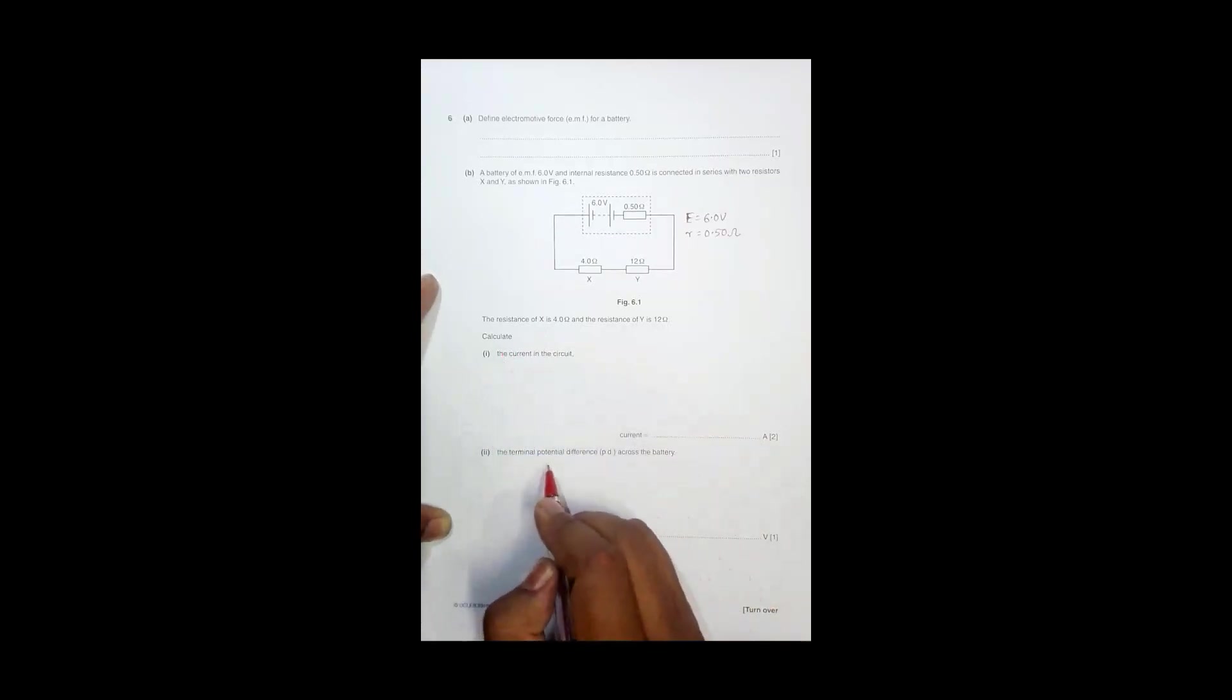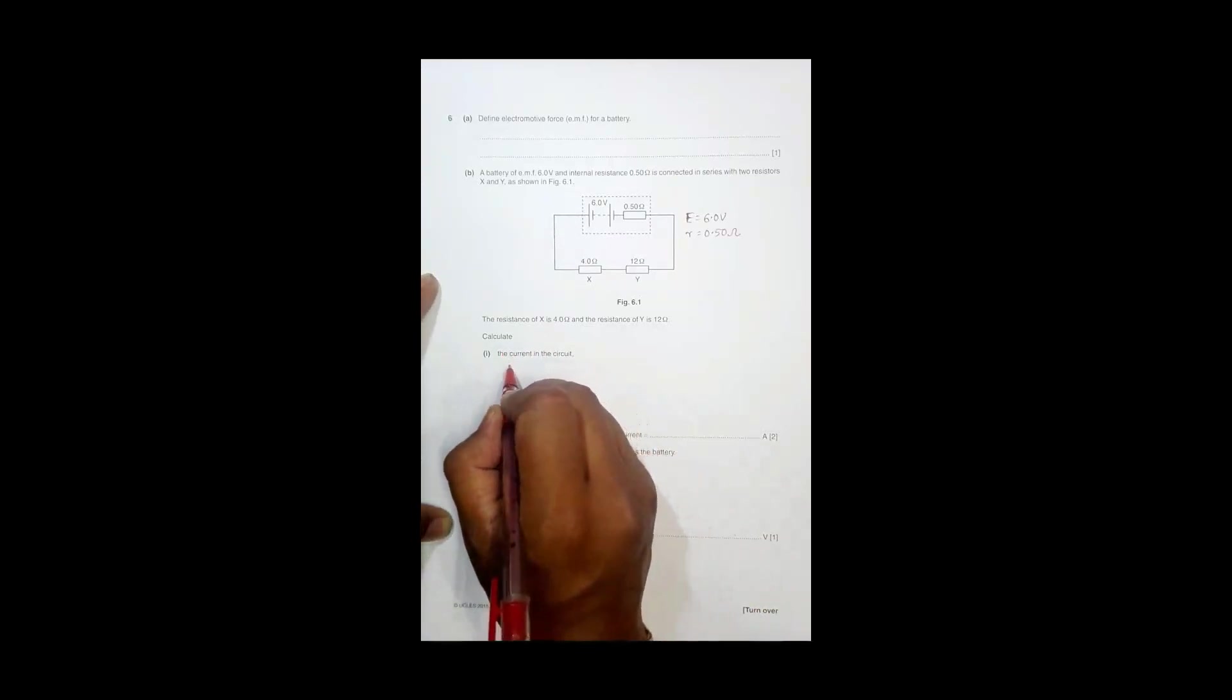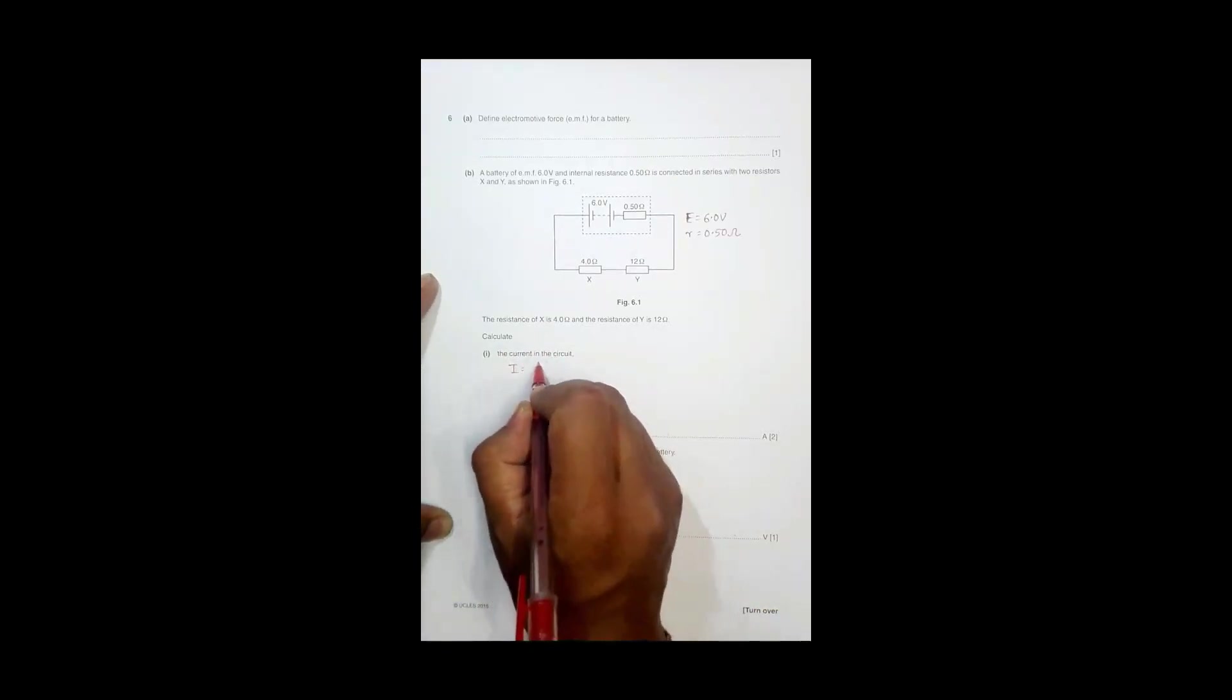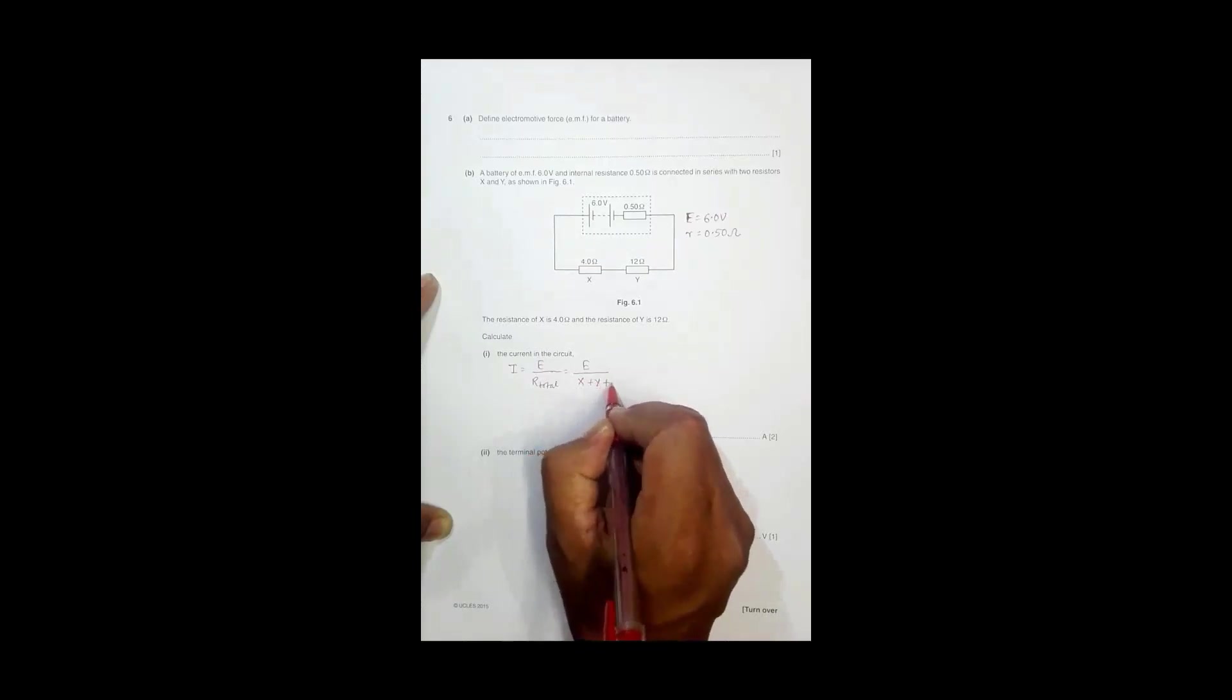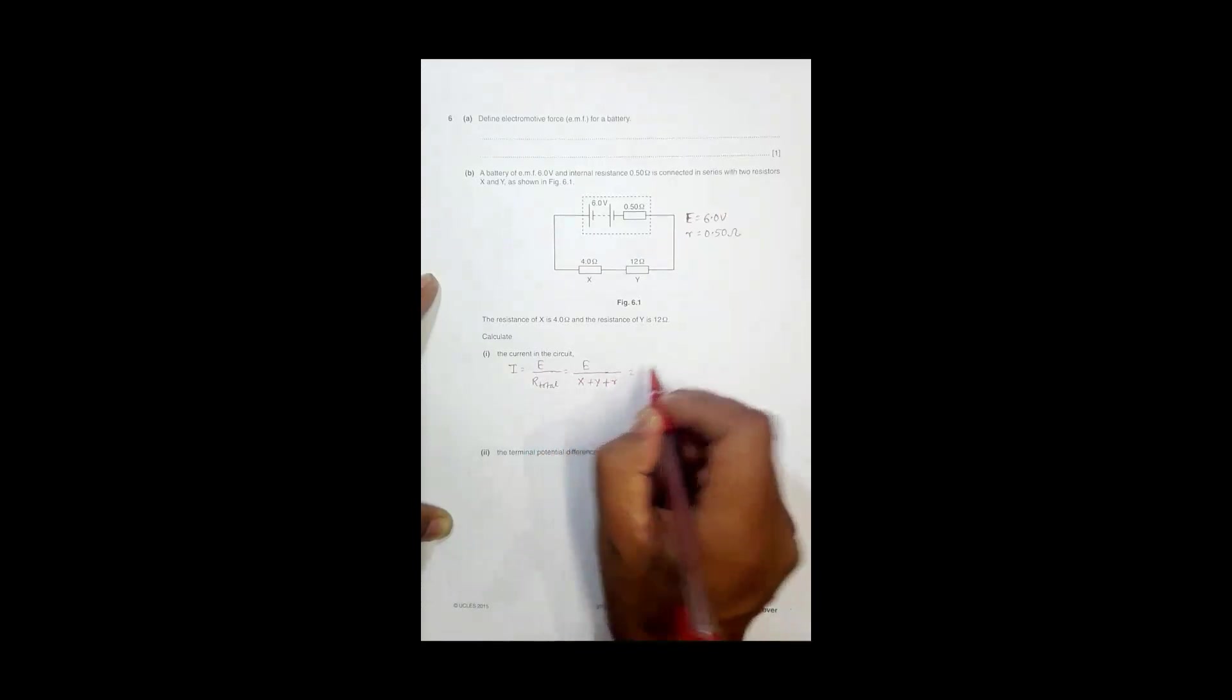So the current across the circuit should be equal to the EMF E by R total of the circuit, and that's equal to E divided by R total. R1 is X, R1 is Y, and what is this small r? So it's equal to 6.0, this X is equal to 4.0 plus 12 plus 0.50.